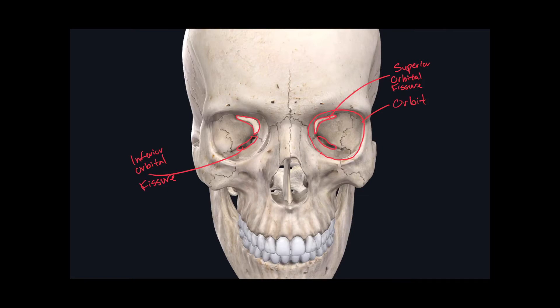We have another space located right in the center, and this is called the piriform aperture. Piriform means pear-like or shaped like a pear, and you can kind of see that it's shaped like a pear.